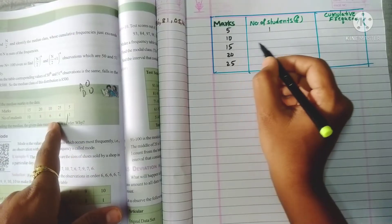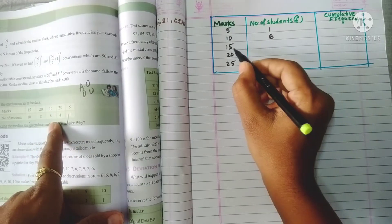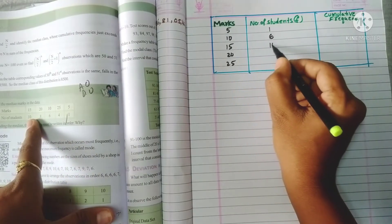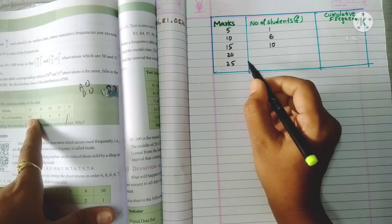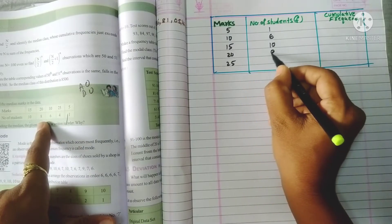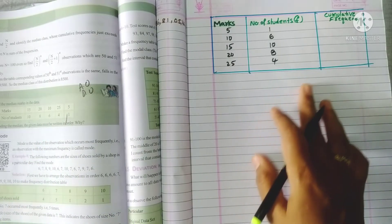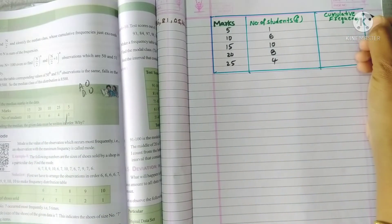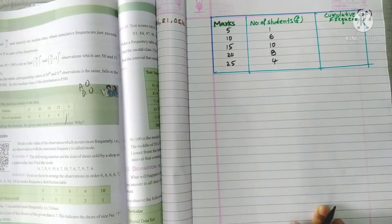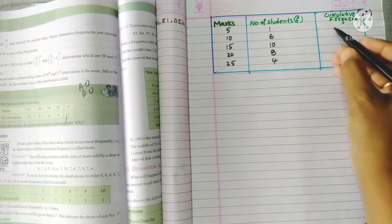Number of students for 5 marks: only 1. For 10 marks: 6. For 15 marks: 10. For 20 marks: 8. And for 25 marks: 4. So here we want to find out CF. This is cumulative frequency. Cumulative frequency means we have to add the successive frequencies.